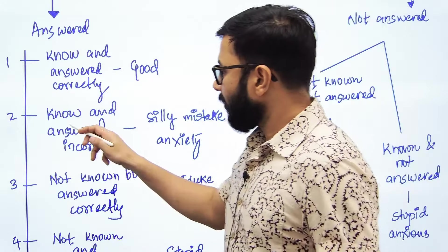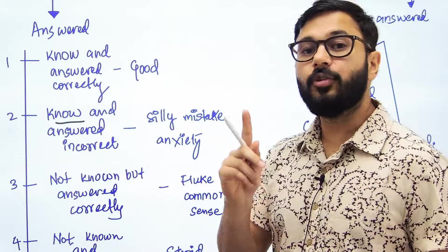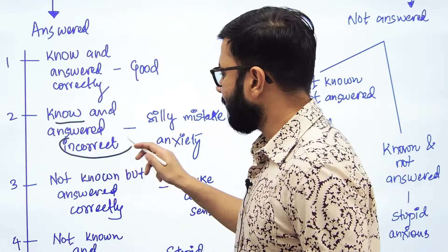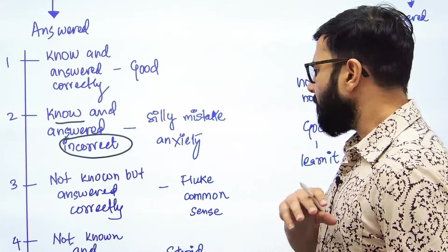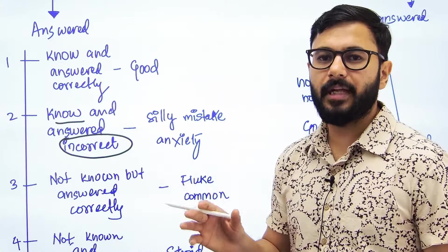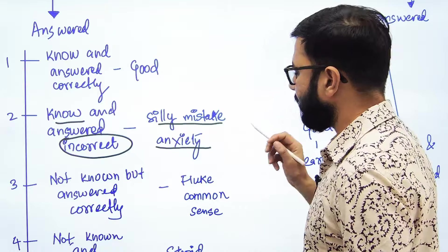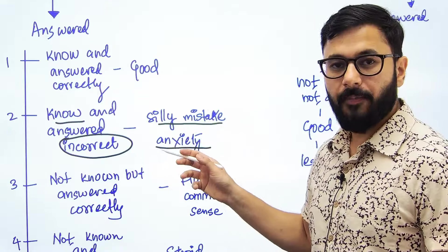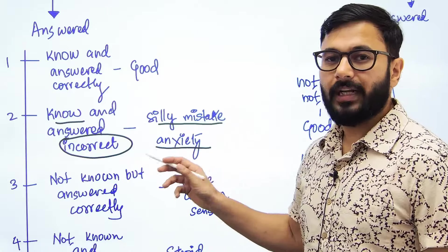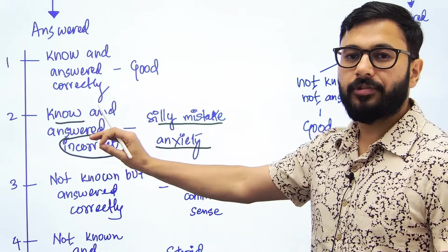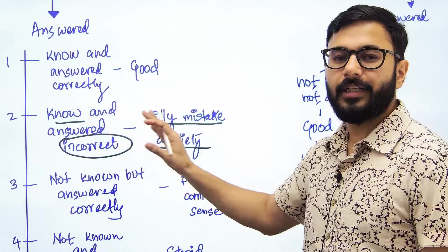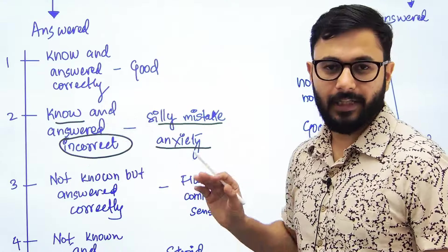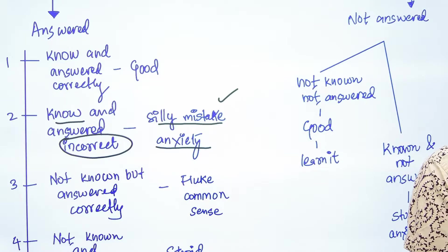The second situation is that you know the answer — you have read about the question, the answer, and the topic — but even then you end up answering it incorrectly. There are various reasons behind it, but two major reasons are: either you did a silly mistake, or you were anxious at that time and therefore read the question incorrectly, applied it incorrectly, understood it incorrectly, or even after knowing it, answered it incorrectly. This is the second situation that might arise.